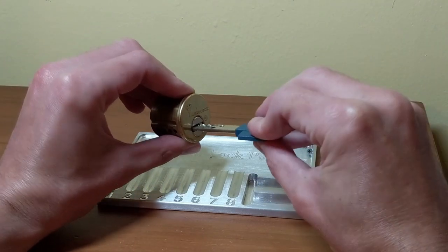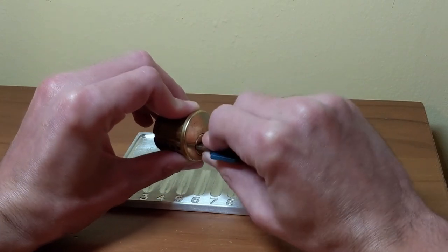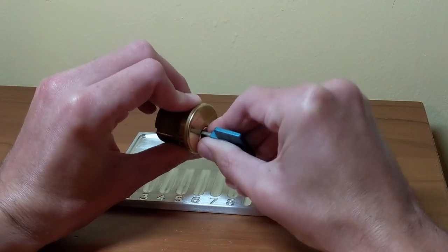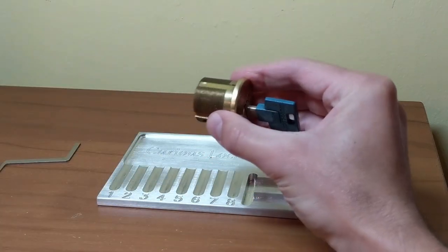Alright, so now I'm going to insert the key into the lock and turn the plug 90 degrees clockwise. I like gutting Multi-locks in this way because it allows the pins to ride along the blade of the key. In general, it's a fairly safe way to gut Multi-locks.